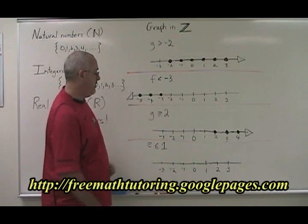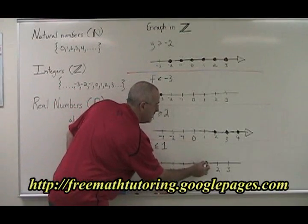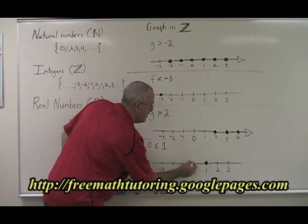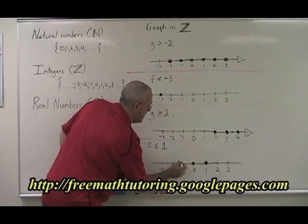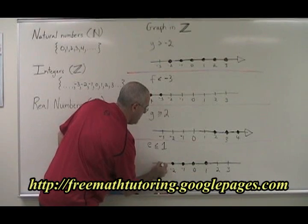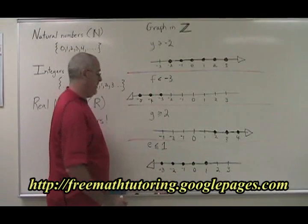E less than or equal to 1. 1 is equal to 1, and 0 and all of the negative numbers are less than 1, going on forever in the negative direction.